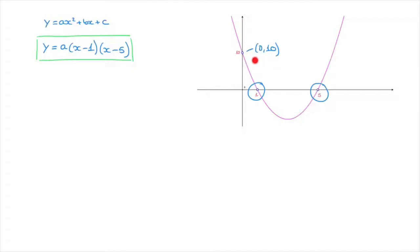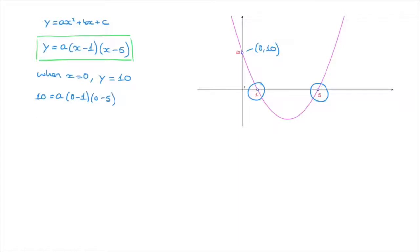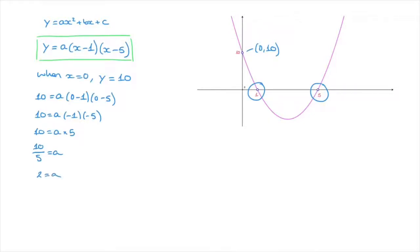The fact that the parabola passes through the point (0, 10) allows us to state that when x equals 0, y must equal 10. So to find the value of a, we replace the two x's by 0 and y by 10. That gives us: 10 equals a times (0 minus 1) times (0 minus 5), which is 10 equals a times (negative 1) times (negative 5), giving 10 equals a times 5. Dividing both sides by 5 gives 10 over 5 equals a, and since 10 divided by 5 is 2, we get a equals 2.